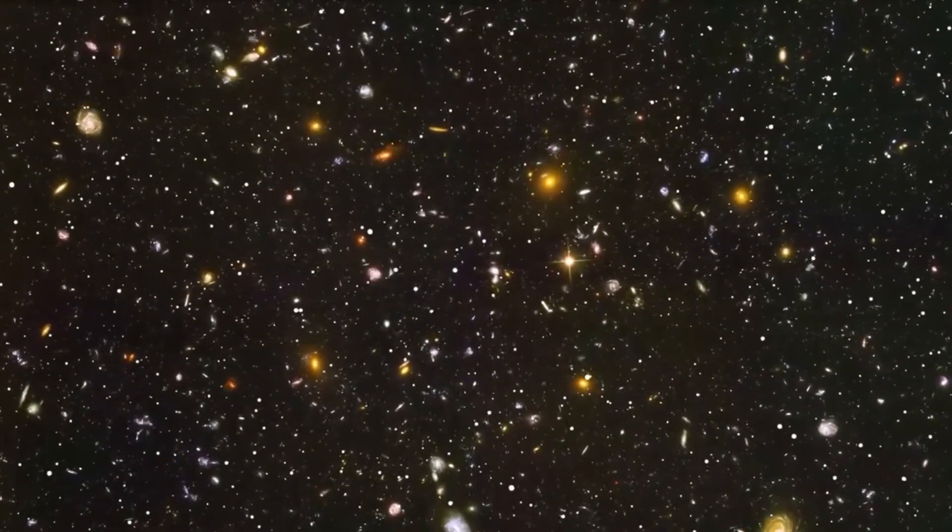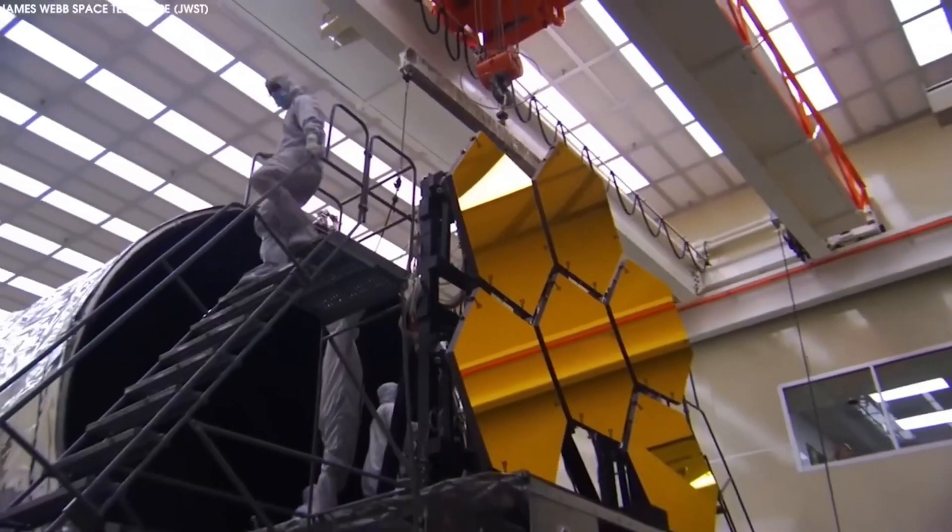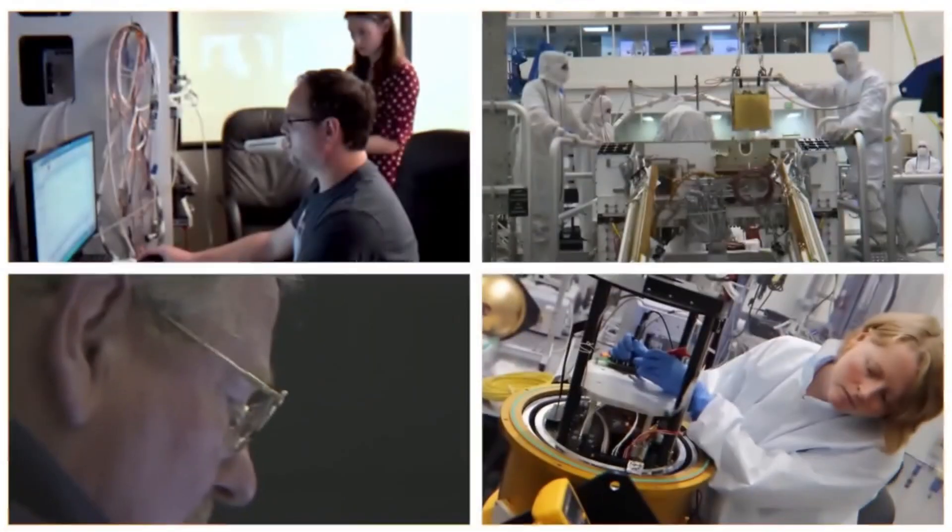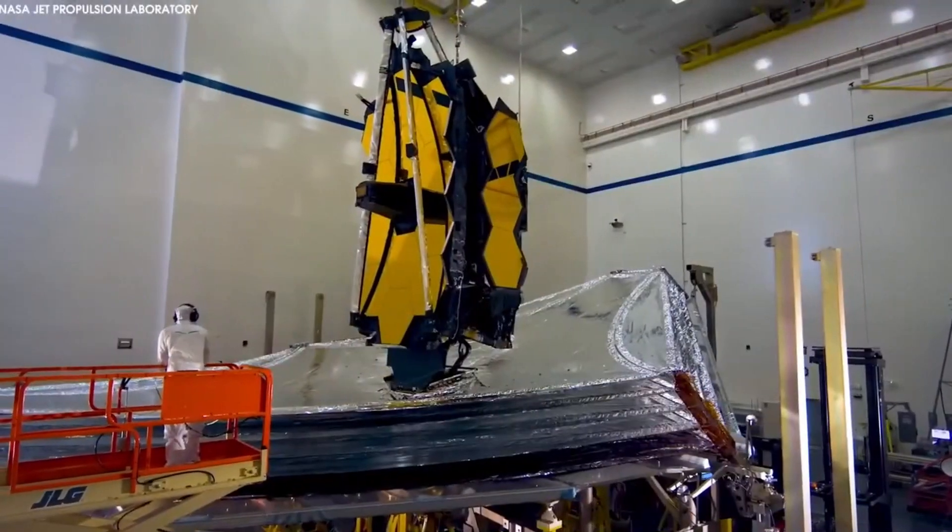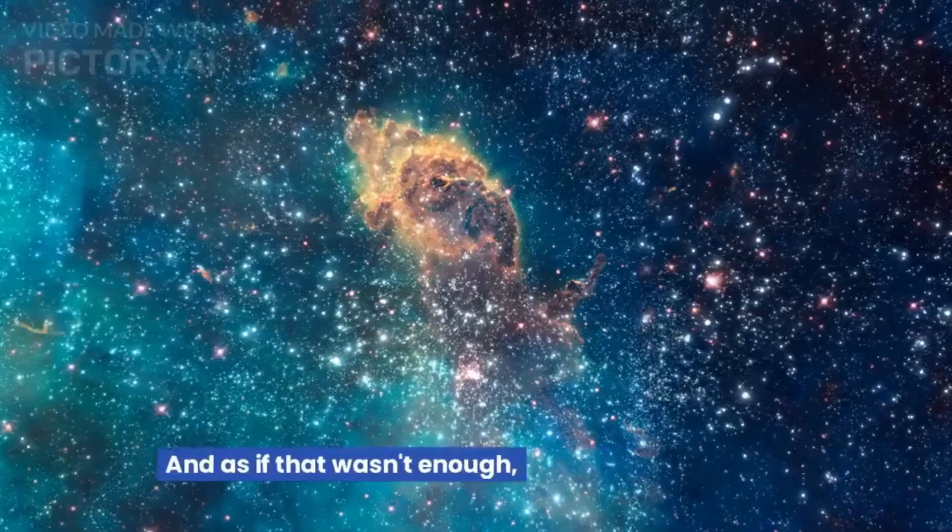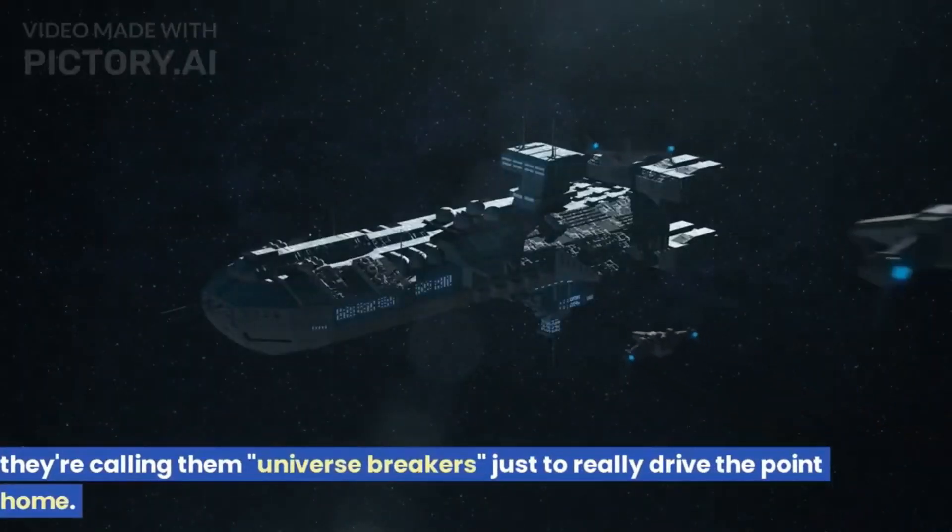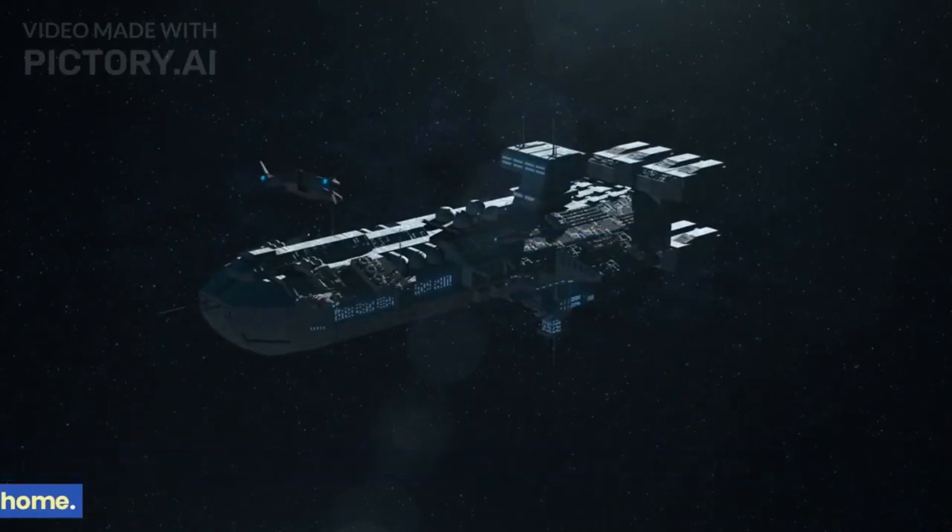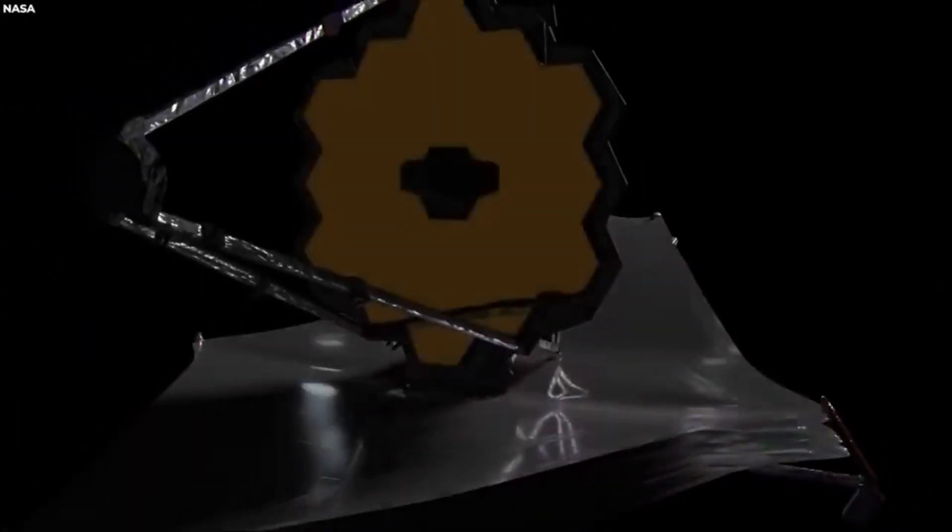Looking back in time might sound like a strange concept, but it's what space researchers do every single day. Our universe is bound by the rules of physics, with one of the best-known rules being the speed of light. When we talk about light, we are actually referring to all the wavelengths across the electromagnetic spectrum, which travel at around a whopping 300,000 km per second. Light travels so fast that in our everyday lives, it appears to be instantaneous. Even at these breakneck speeds, it still takes some time to travel anywhere across the cosmos.